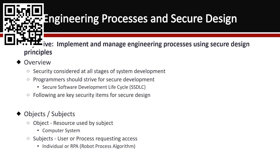We're going to get into objects and subjects. The object is basically a resource that is used by the subject — a good example would be a computer system or a mainframe. A subject is a user or process requesting access. That could be an individual or an RPA — a robot process algorithm — which is basically a macro on steroids that uses an algorithm and can do some machine learning.